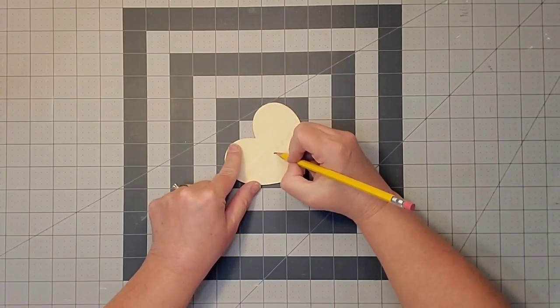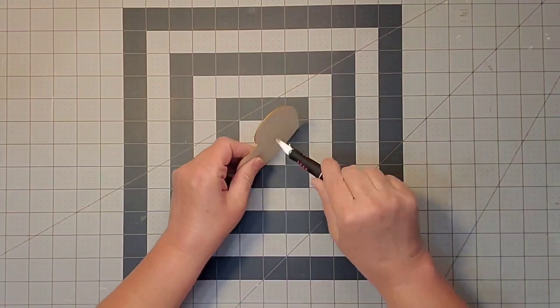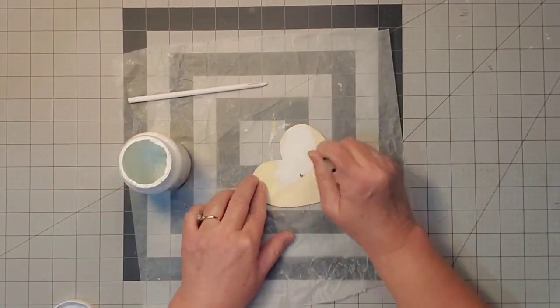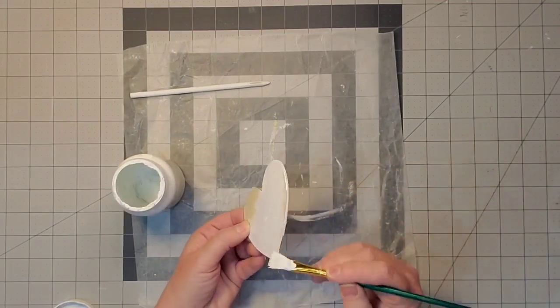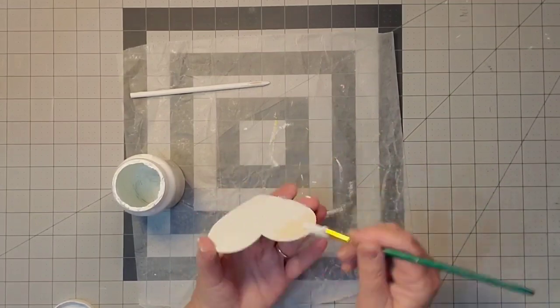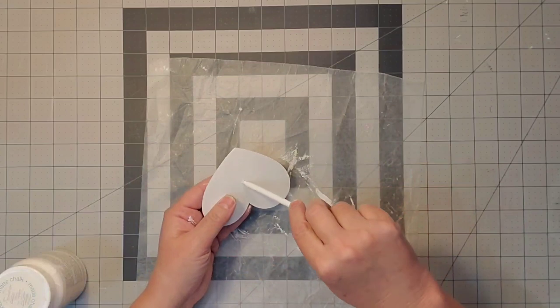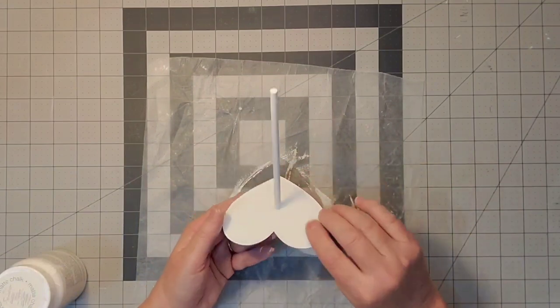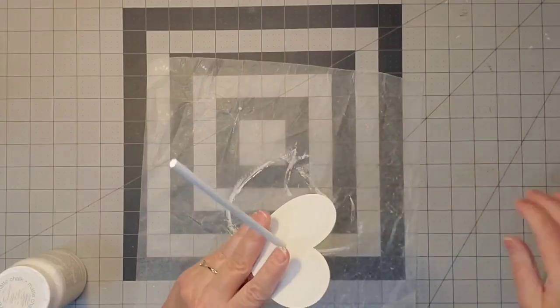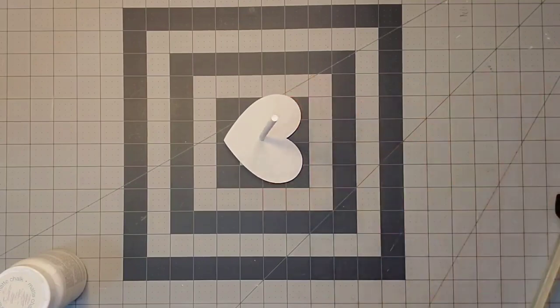First, I'm marking the center of my heart and using a utility knife to make a hole right there. Now I'll give my heart a good coat of white Waverly Chalk Paint on the front, edges, and bottom. Once it's dry, I'll put my dowel down through the middle and add hot glue at the bottom.